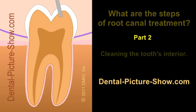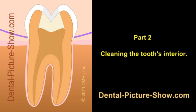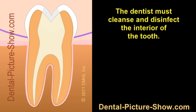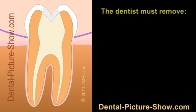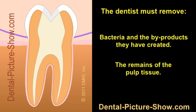Once access to the interior of the tooth has been created, the next step of the root canal procedure involves removing debris and contaminants harbored within the tooth's pulp chamber and root canals. This can include bacteria, the waste products and toxins they have created, as well as remnants of or breakdown products derived from the original pulp tissue.